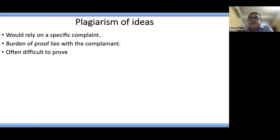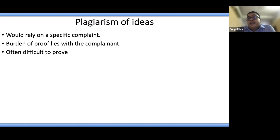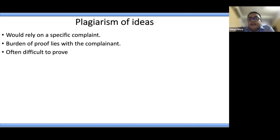Plagiarism of ideas is much more difficult to detect and would rely on a specific complaint. For example, if I had a hypothesis which I discussed with someone and they published a paper on that hypothesis before I did, it was my fault for discussing it. I would need to prove it was my hypothesis in the first place — the burden of proof lies with the complainant. However, if a clear-cut proof is presented — such as a hypothesis published in a previous journal and now republished by somebody else as original — such papers could be retracted.